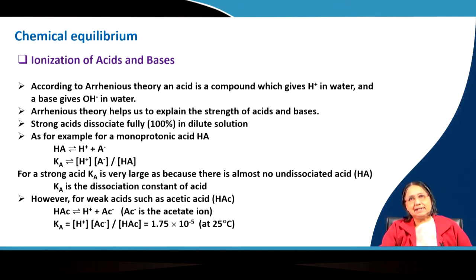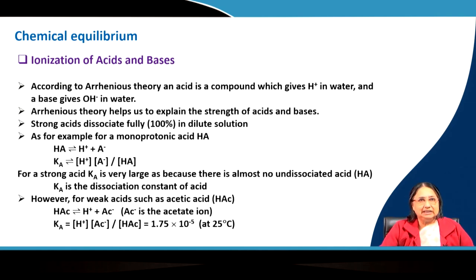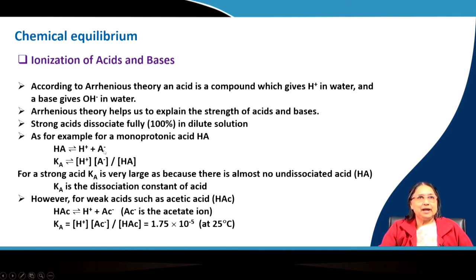Ionization of Acids and Bases we have already seen in the Acid-Base chapter. According to Arrhenius theory, an acid is a compound which gives H⁺ ion in water, and a base gives OH⁻ ion in water. This theory helps us explain the strength of acids and bases. Strong acids are 100% dissociated in dilute solution. For a monoprotic acid HA, the acid dissociation constant KA equals [H⁺][A⁻] divided by [HA].